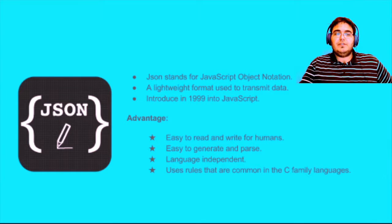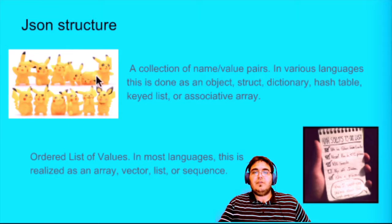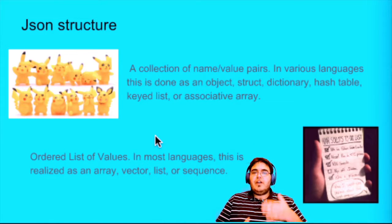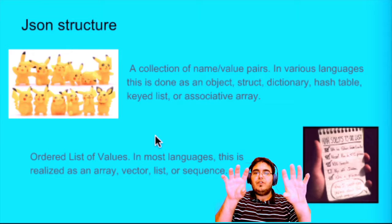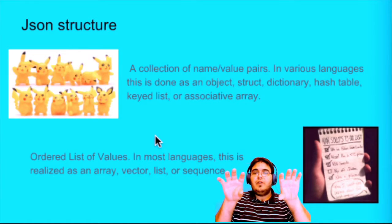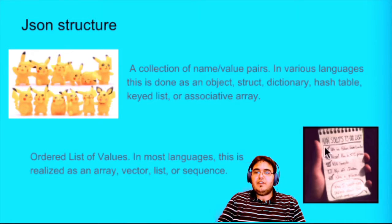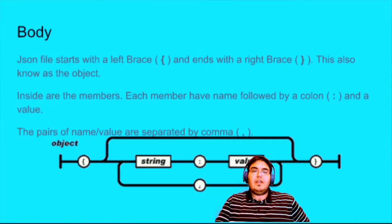Looking at a JSON file, we have two kinds of structures. We have a collection — for example, a collection of Pikachus. In this collection we have name-value pairs. In various languages this maps to an object, struct, dictionary, hash table, key list, or associated array. We name a field — say we want to store a name — we name it 'name' and we store the value there. Everything is also stored in an ordered list, which looks like a list of items, and in most languages this is represented as an array, vector, list, or sequence.